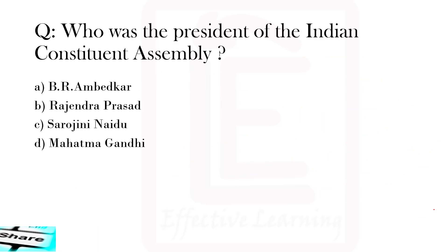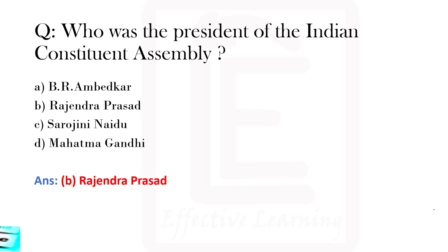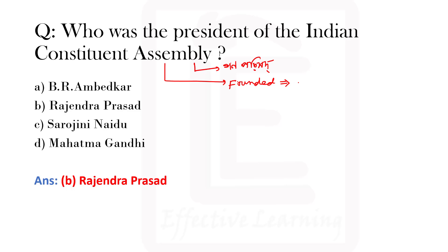Who was the President of the Indian Constituent Assembly? The answer is B, that is Rajendra Prasad. The Constituent Assembly, known as Gano Parishad, was founded on 9th December 1946.